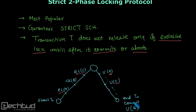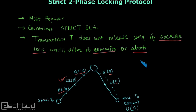When the transaction ends and the data is committed, then the exclusive lock — the write lock — is removed after commit. Because we unlock the write lock only after commit, this means we will not have any dirty reads. When we don't have dirty reads, we will have only strict schedules.